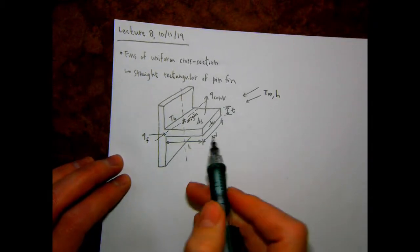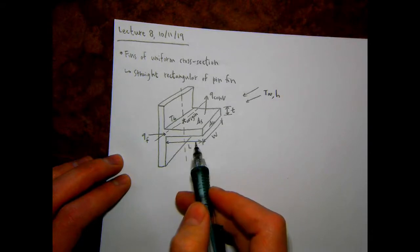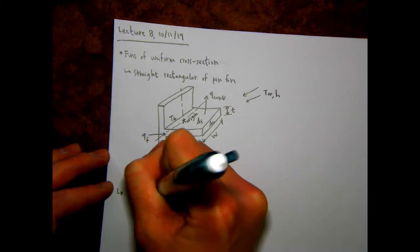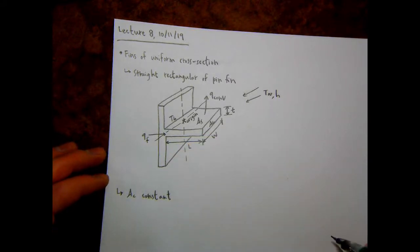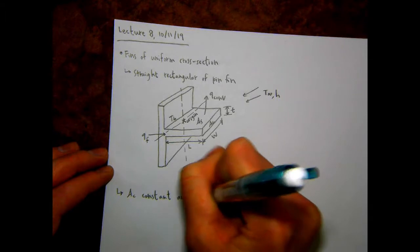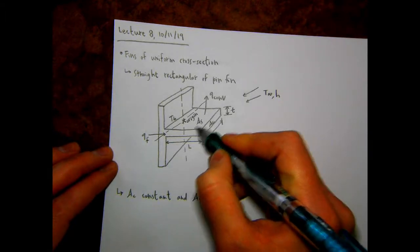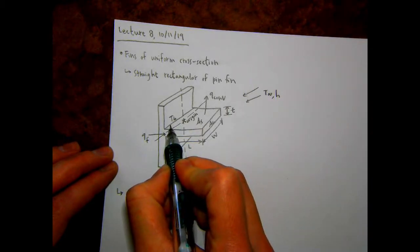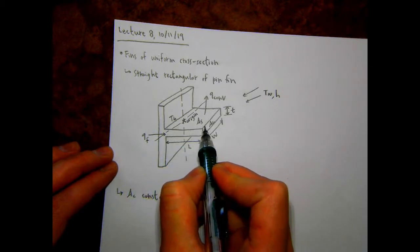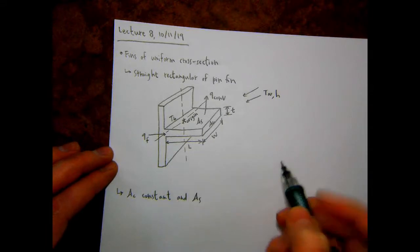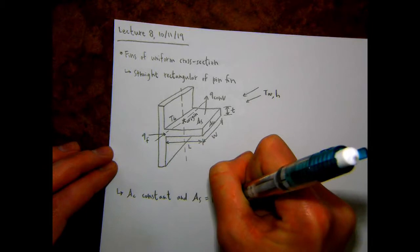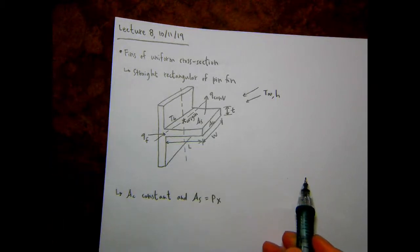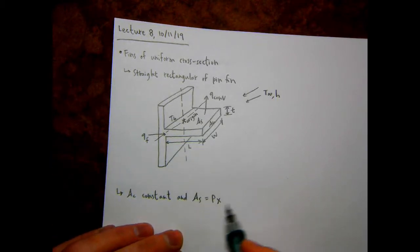For this specific setup with constant cross-sectional area, A_sub_C is constant. The surface area A_sub_S equals the perimeter P times x — so the surface area up to whatever distance you're considering along the fin length. For the entire fin, it would be P times L.